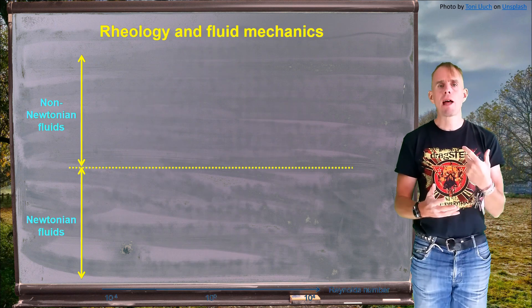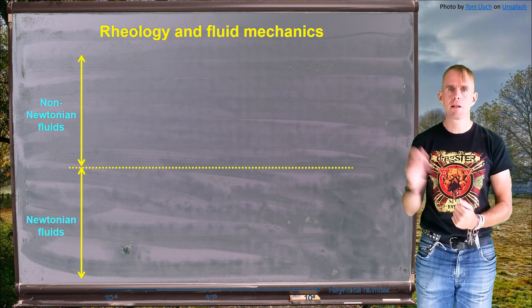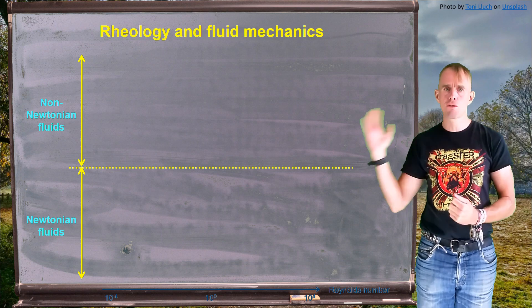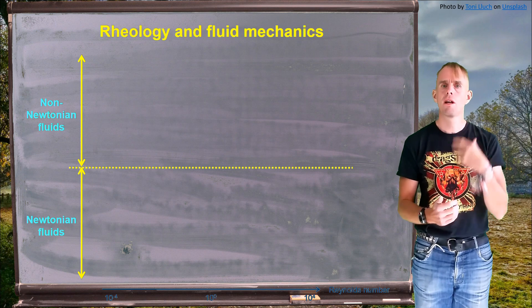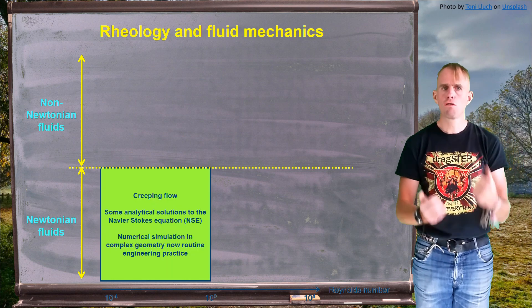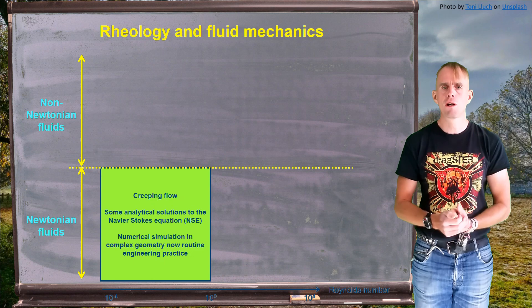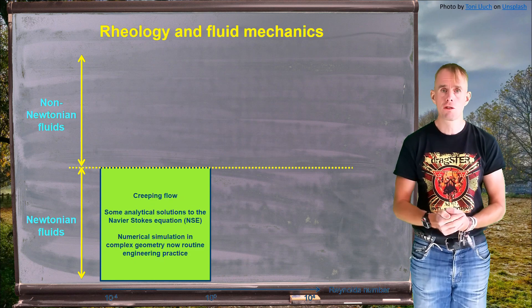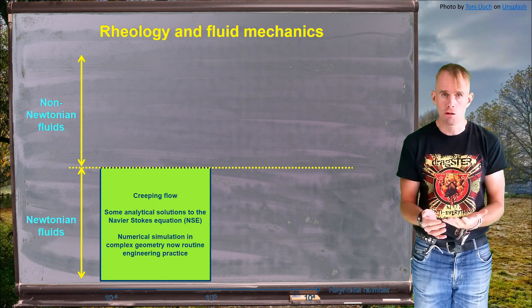Let's think about how rheology fits into the fluid mechanics that you might already know. So, on my blackboard here, I'm putting a kind of graph. I'm looking as a function of Reynolds number on the x-axis at two different classes of material, Newtonian fluids and non-Newtonian fluids. Let's recap Newtonian fluids first. At low Reynolds number, you've got creeping flow. You can use the Navier-Stokes equation to find some simple analytical solutions for simple flow scenarios in simple geometries. And you can solve the Navier-Stokes equations numerically for engineering geometries.